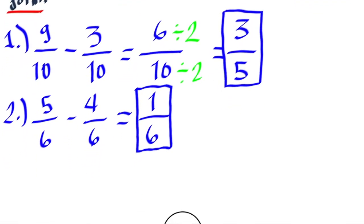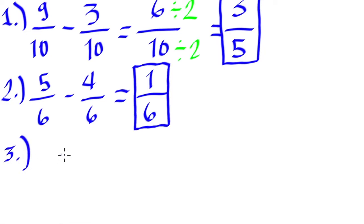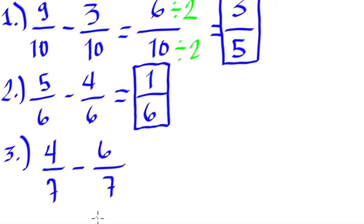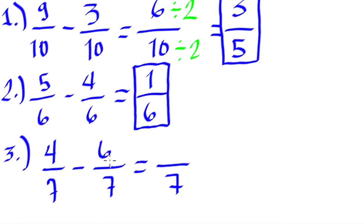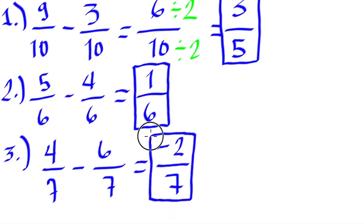Let's have one or two more examples. For example number 3, let's say we have 4 over 7 minus 6 over 7. Remember how to do similar fractions? We copy the denominators, and then we subtract the numerators. 4 minus 6 — since the number we are subtracting by has a bigger absolute value, what we're going to do is copy the minus sign and do the subtraction: 6 minus 4 is 2. So, 4 over 7 minus 6 over 7 gives us minus 2 over 7. The only difference here is that we have a minus sign — rules of algebra follow.